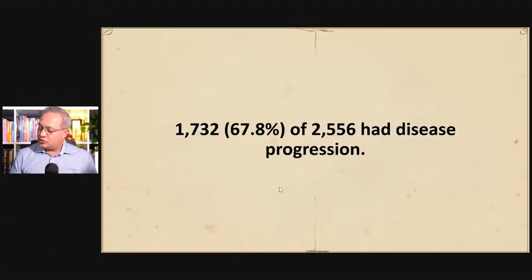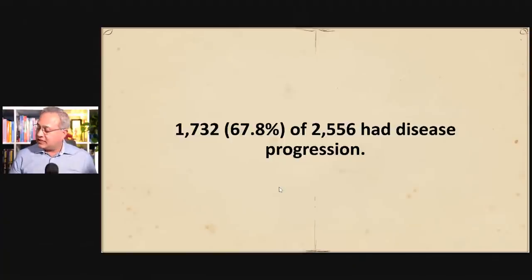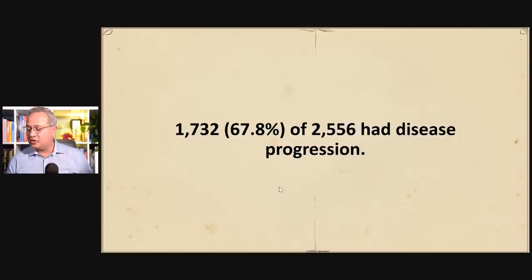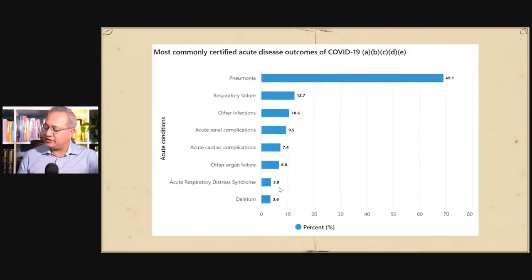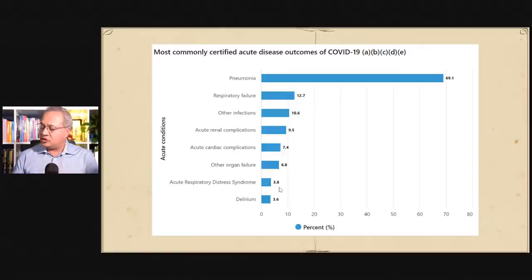1,732 patients out of 2,556 had disease progression. Of course, we're talking about people who passed away. The most common disease progression was pneumonia and respiratory failure — lung damage was the top. Respiratory failure is lung damage as well, so these were clearly the leading causes.